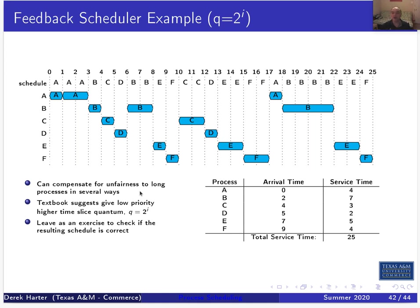With a variable time slice quantum for the feedback scheduler applied to our problem: A gets scheduled for one time slice quantum, then at priority level one gets scheduled for two time slice quantums — which is why B doesn't execute at time two like before. A then gets returned to priority level three, at which point B gets scheduled for a single time slice quantum.